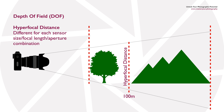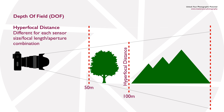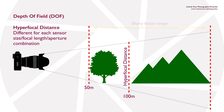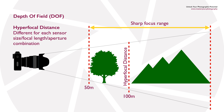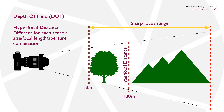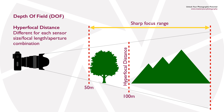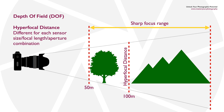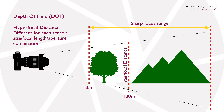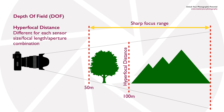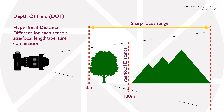The hyperfocal distance will be different for every camera sensor size, focal length, and aperture combination. If you want to work out what the hyperfocal distance is for a particular combination, there are various online calculators and apps that can do this for you. Some lenses also have what's called a depth of field scale marked on them and you can work it out from that.